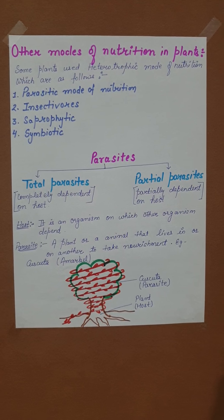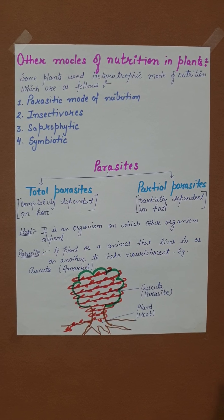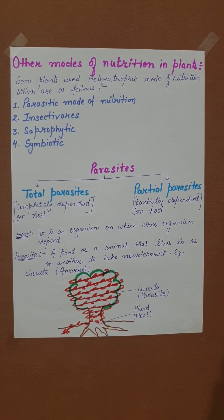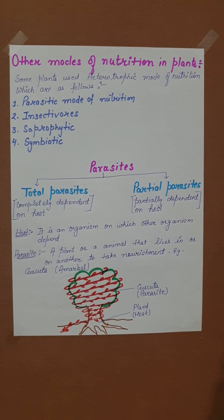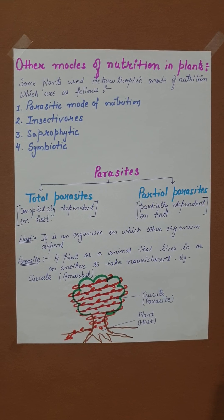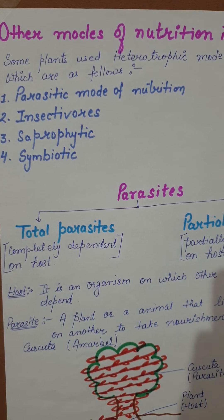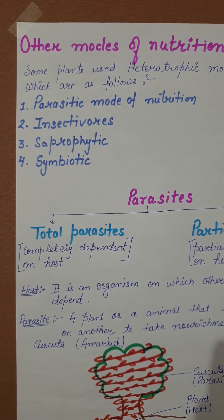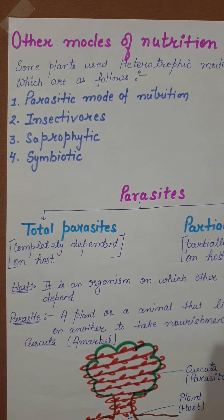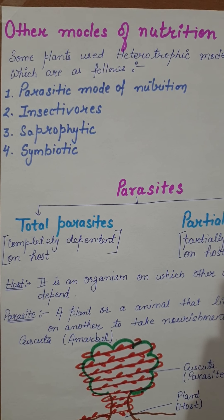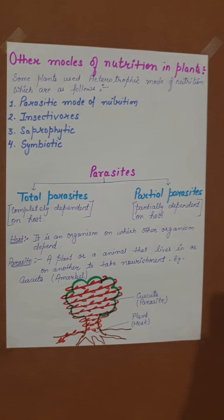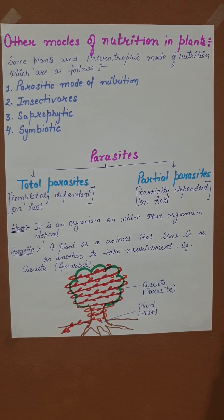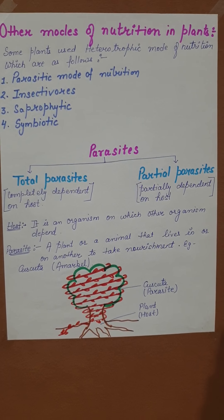It means that there are few plants that are not autotrophic, few plants that are not able to make their own food — they are heterotrophic. So here we have four modes of nutrition. We are going to study all modes of nutrition one by one. Let's start with parasitic mode of nutrition, or parasites.